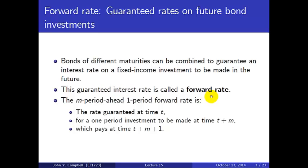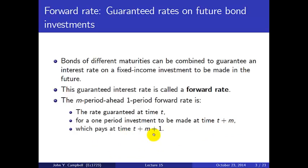More specifically, the m-period-ahead one-period forward rate is the rate guaranteed at time t for a one-period investment to be made at time t plus m, which will pay off one period later at time t plus m plus one.